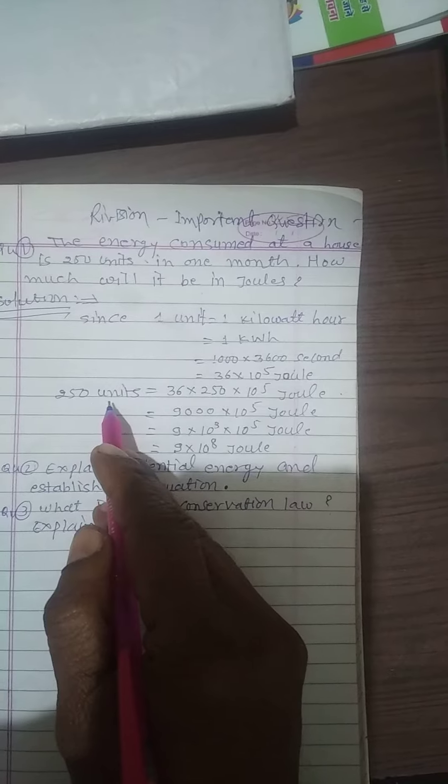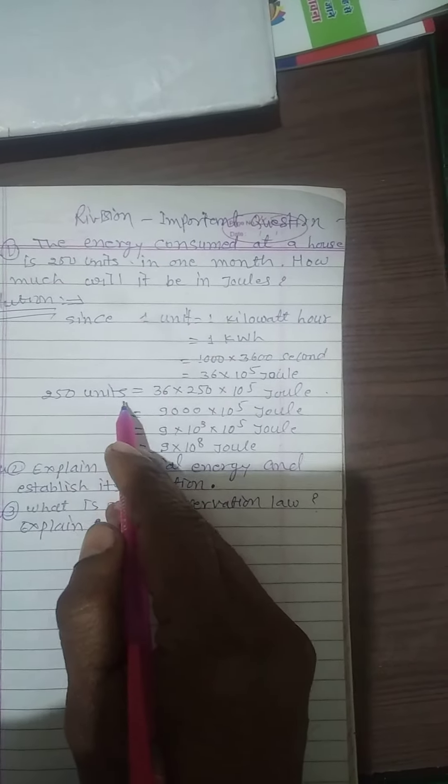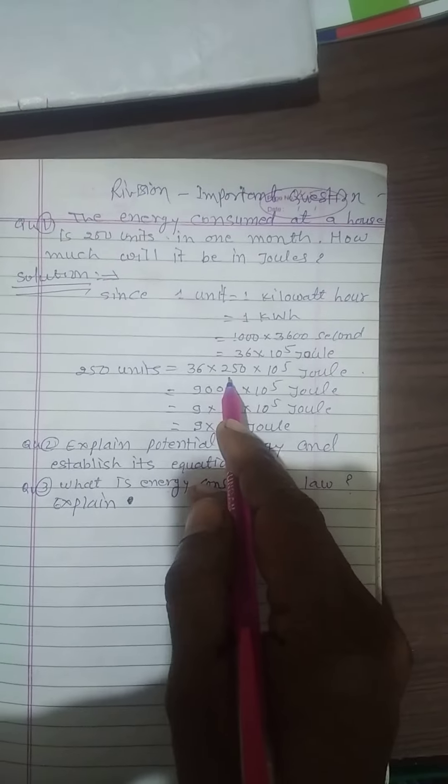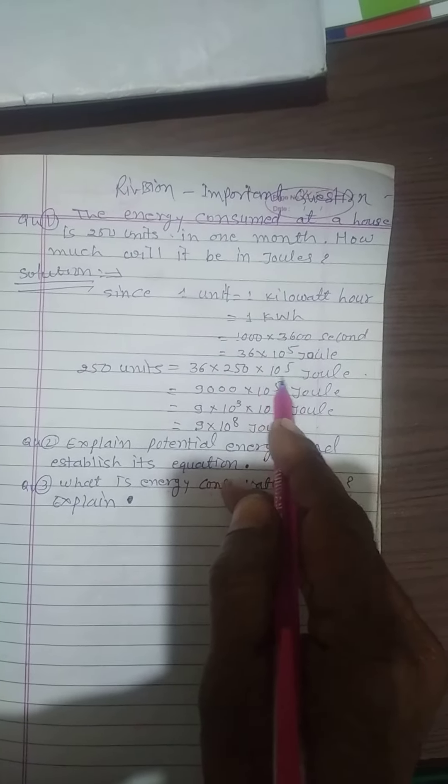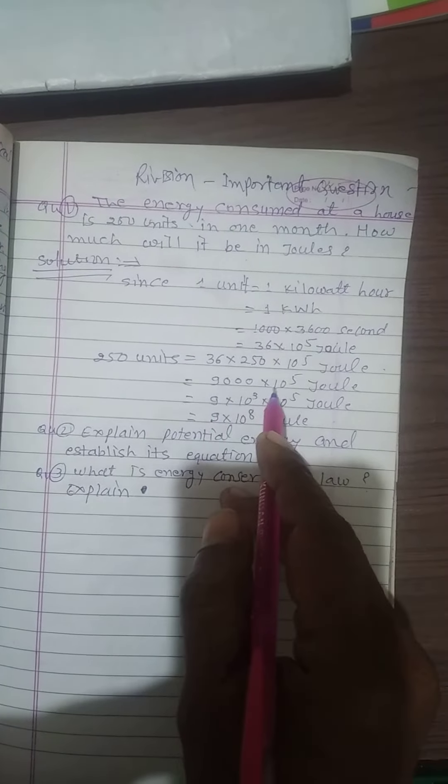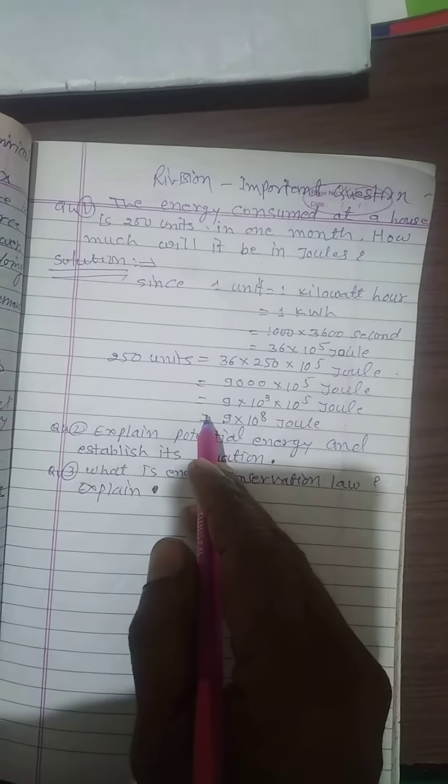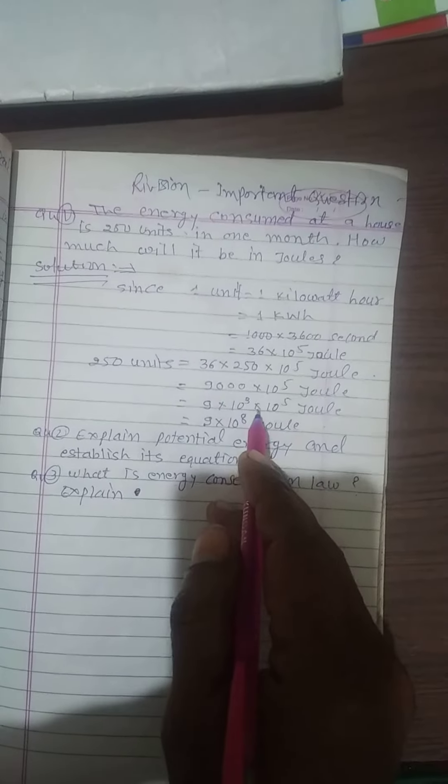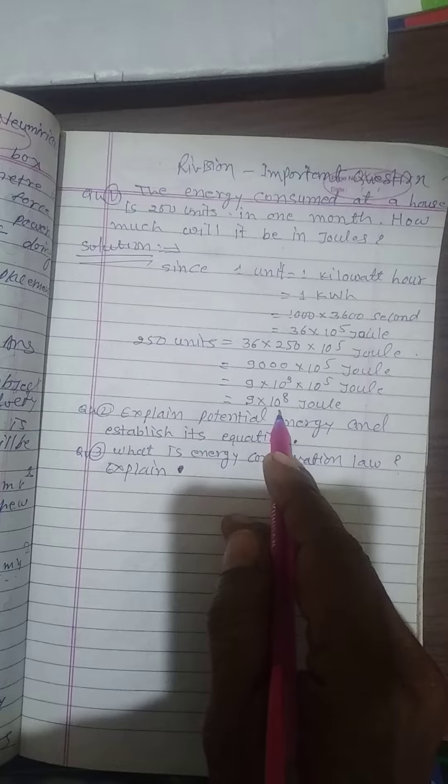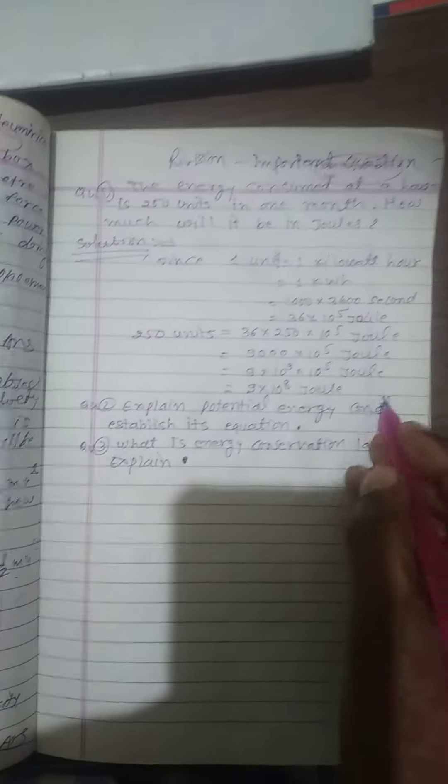250 units equal 36 times 250 times 10 power 5 joules, equals 9000 times 10 power 5 joules, equals 9 times 10 power 3 times 10 power 5 joules, equals 9 times 10 power 8 joules. Answer.